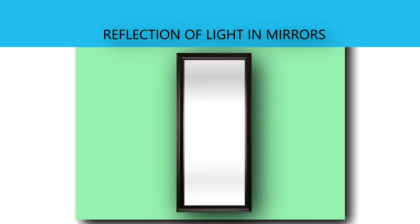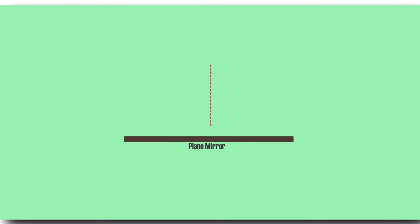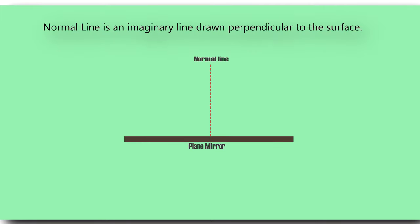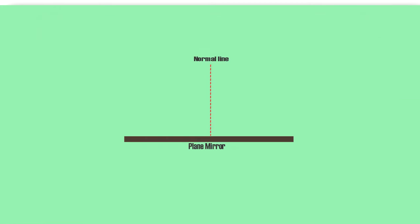Reflection of light in mirrors: consider a plane mirror. Draw a line perpendicular to the surface of the mirror — we call this the normal line. A normal line is an imaginary line drawn perpendicular to the surface of the mirror at the point of incidence, where the ray of light strikes the mirror.